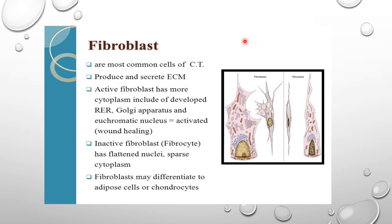Now we'll discuss the cells of connective tissue one by one. One of the basic cells is the fibroblast, which exists in two forms: the immature or active form called the fibroblast, and the inactive form called the fibrocyte. Fibroblasts are responsible for secretion of the extracellular matrix of the connective tissue and are also responsible for the formation of the collagen fibers.